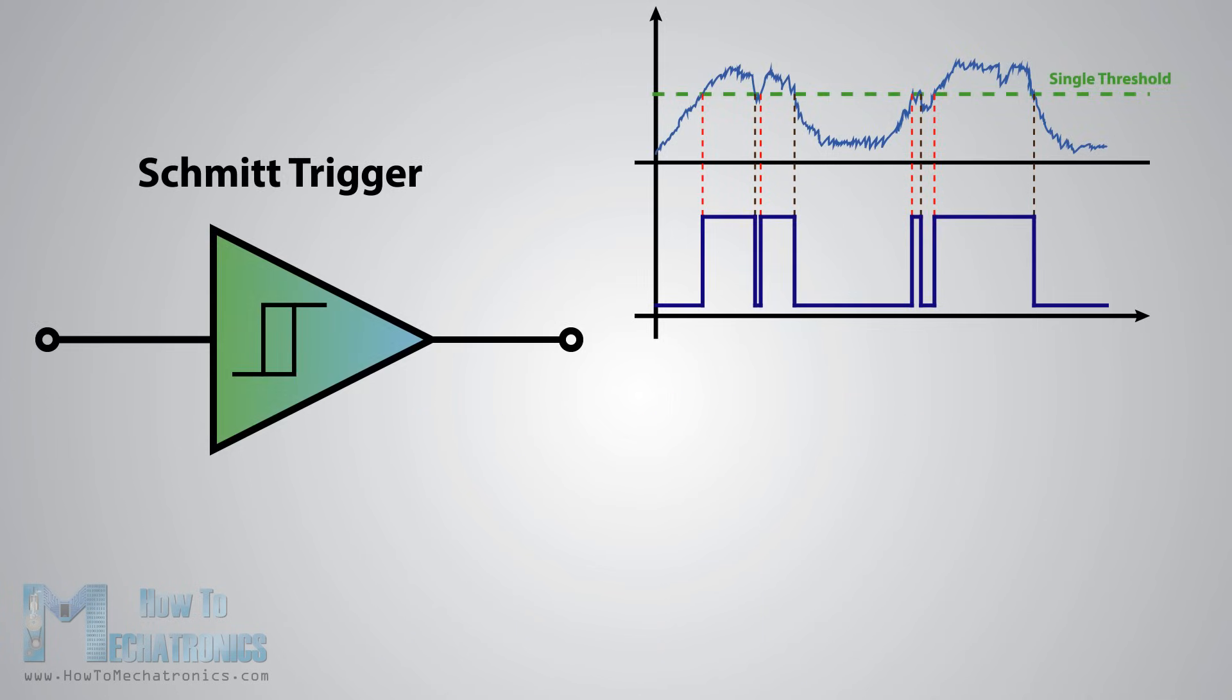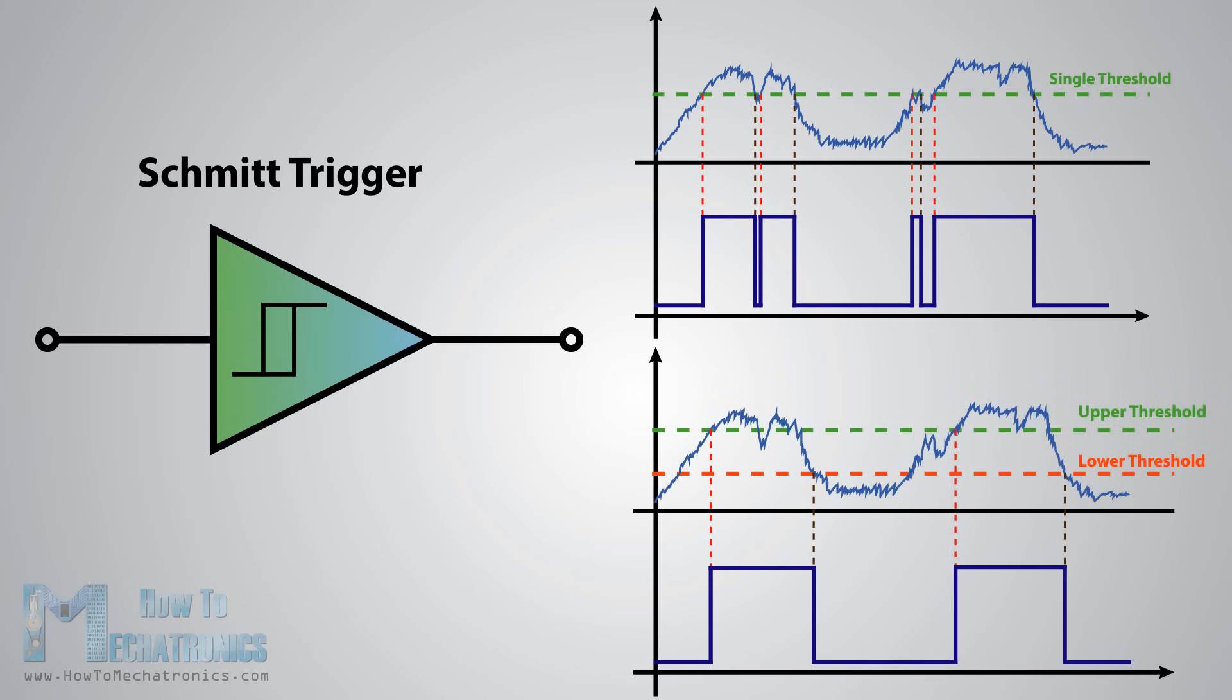For example, if we have a noisy input signal like this that is meant to have two pulses, a device that has only one set point or threshold could get incorrect input and register more than two pulses as shown in this illustration. If we use the Schmitt trigger for the same input signal, we will get a correct input of two pulses because of the two different thresholds.